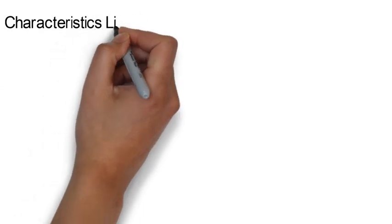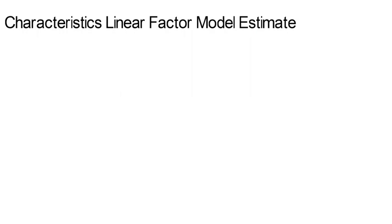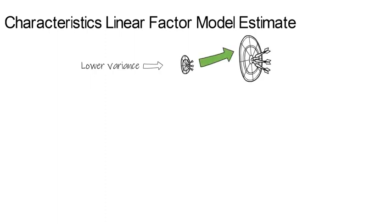The linear factor estimate to the covariance matrix of returns is biased. That's a bad thing. But it has a lower variance and ergo a higher precision than the sample covariance matrix, which is a good thing.